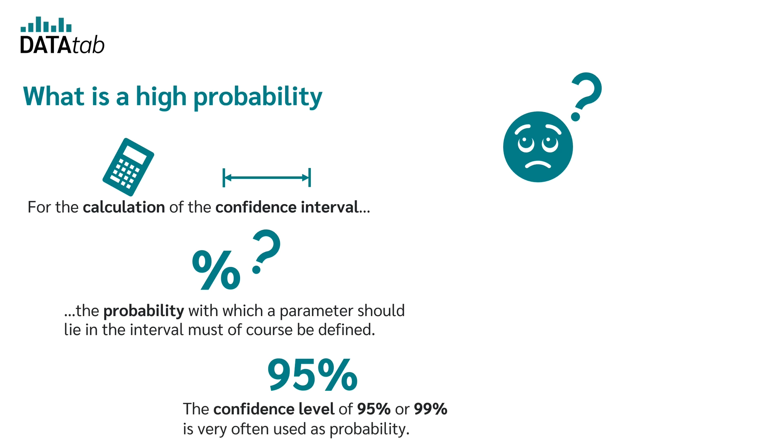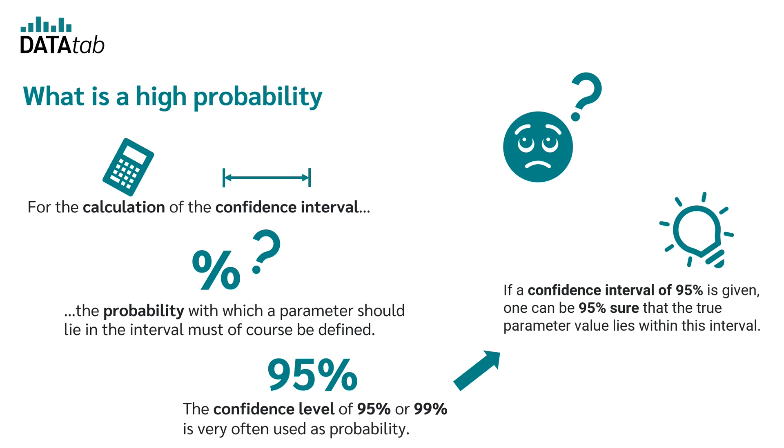As a probability, the confidence level of 95% or 99% is used very often. If a confidence interval of 95% is given, one can be 95% sure that the true parameter value is located within this interval.